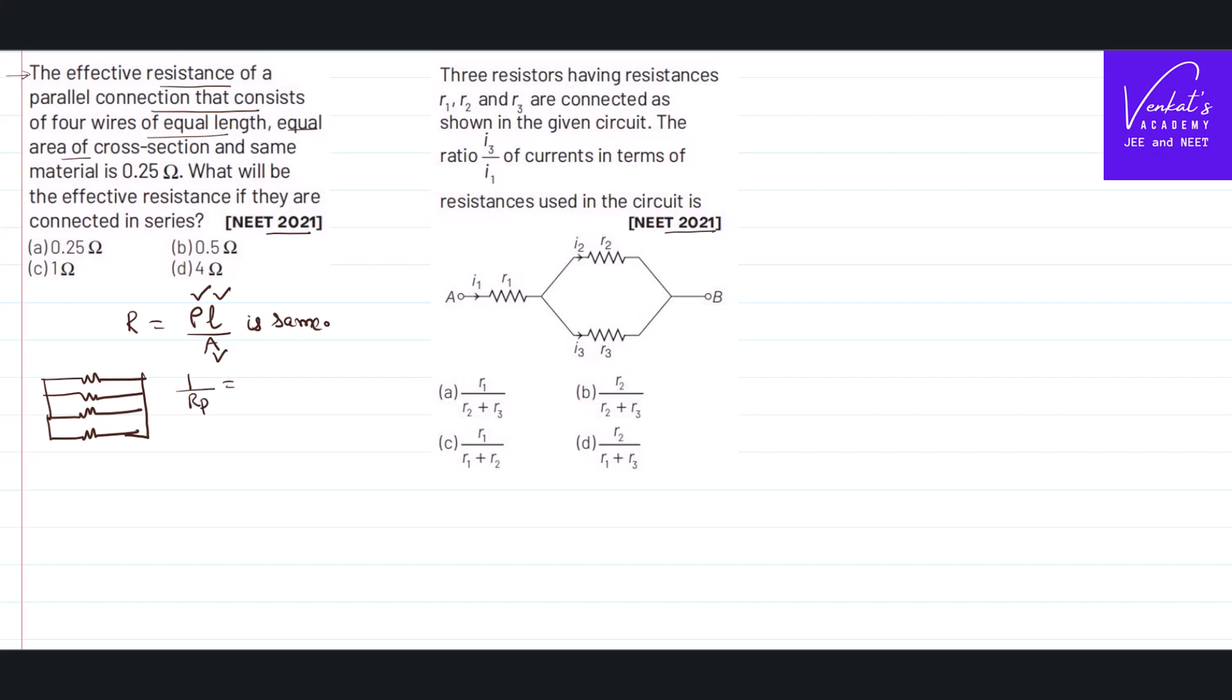1/R_parallel = 1/R₁ + 1/R₂ + 1/R₃ + 1/R₄. If all are same, then 1/R_parallel = 4/R. That implies R_parallel = R/4.